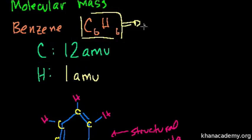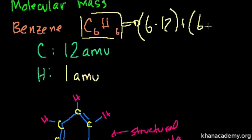So what is the mass of 1 molecule of benzene? Well, it's 6 times the carbon mass, so 6 times 12, plus 6 times the mass of hydrogen, plus 6 times 1. So that is 6 times 12 is 72, plus 6 times 1, plus 6 is equal to 78.